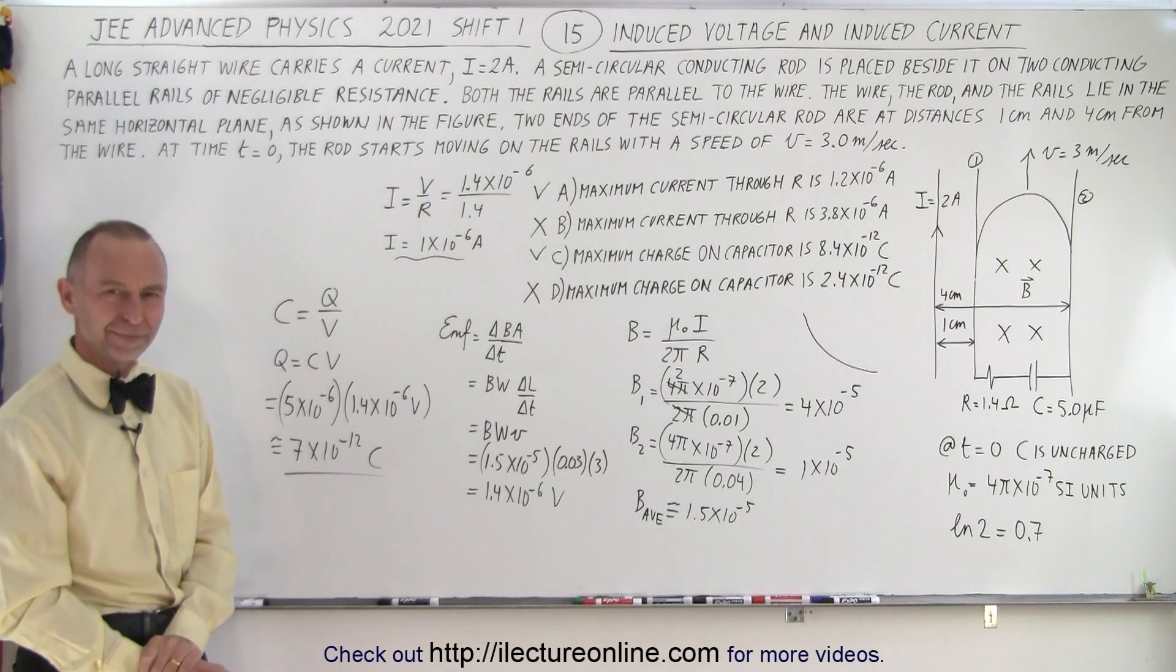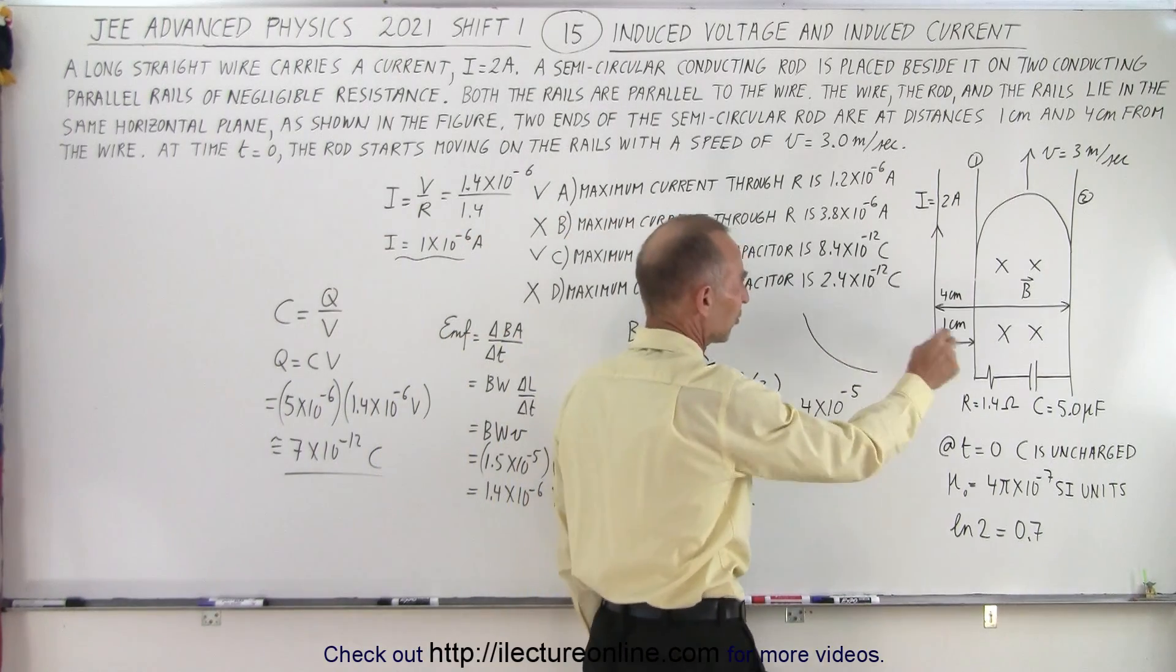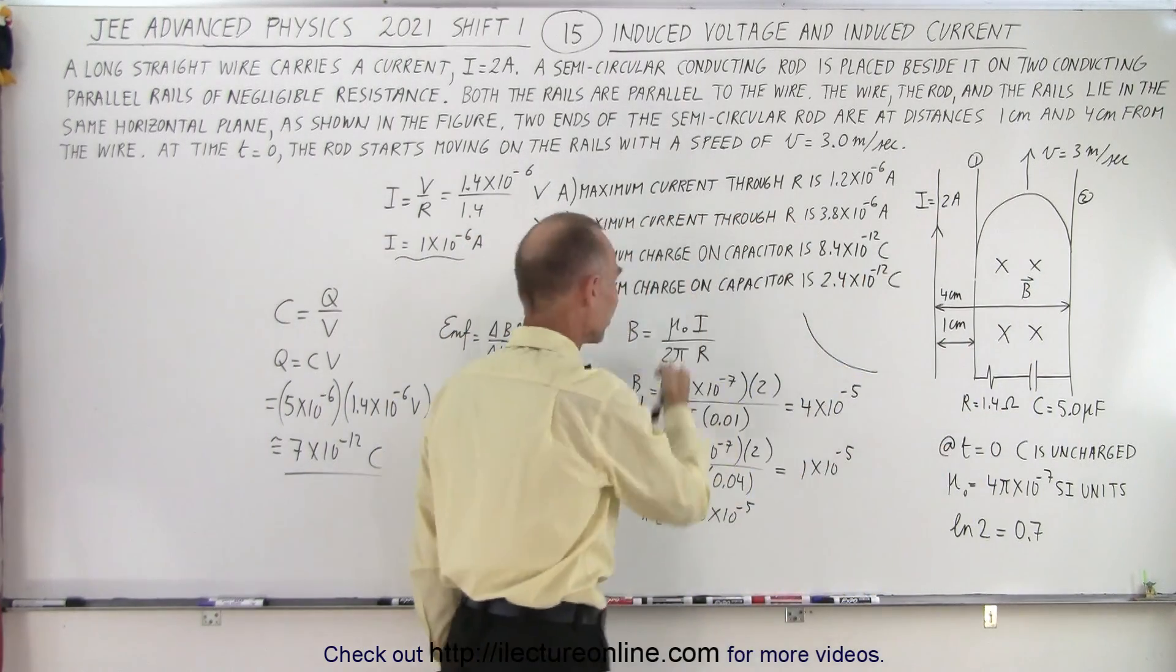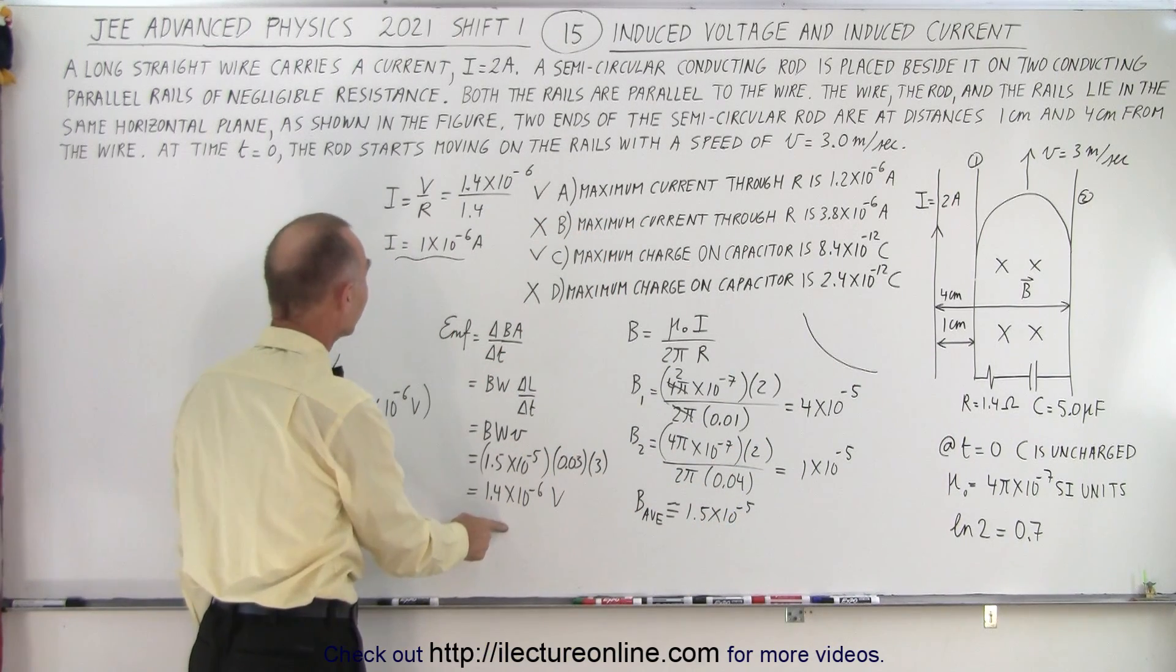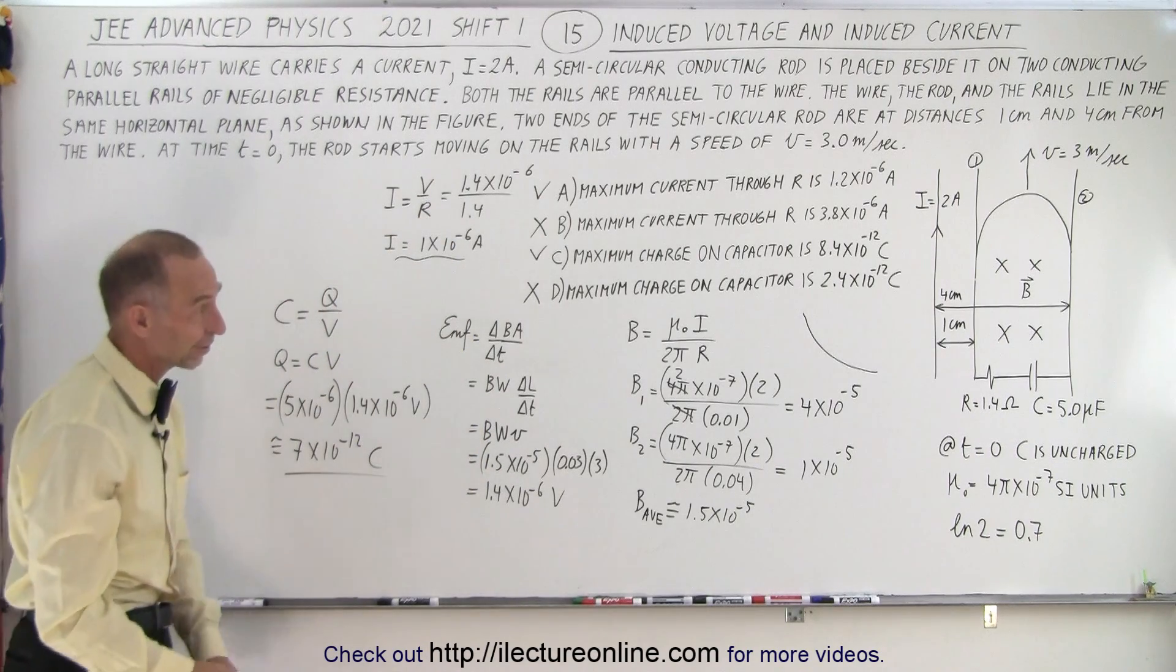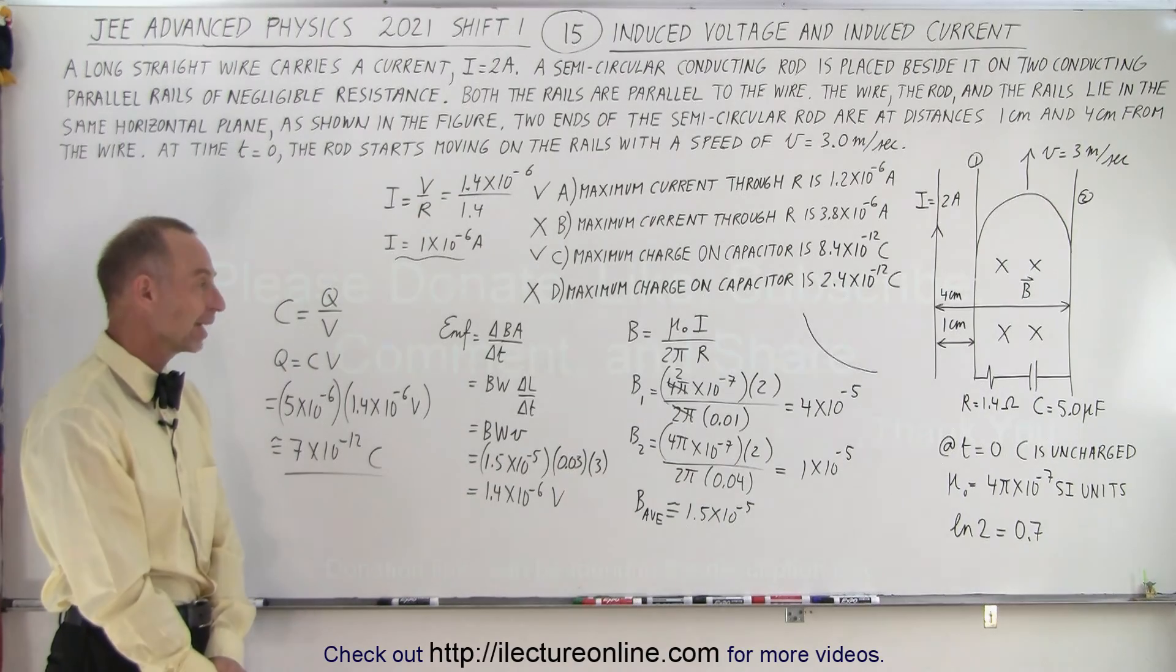Kind of an evolved problem isn't it? Because you first have to set it up, understand that we have a magnetic field, you have to then calculate the strength of the magnetic field, kind of get an average. Then you have to find the induced emf, then you have to find the current, and then you have to find the charge on the capacitor. So yeah doing all that in three minutes or less, it's a tough task.